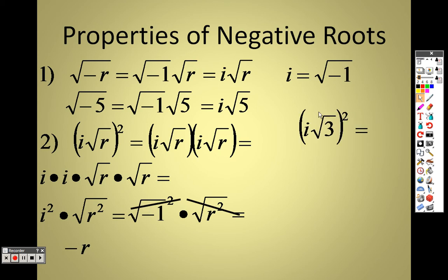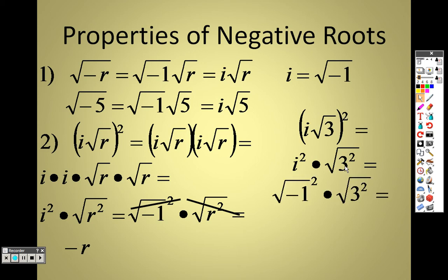So when you square that, you get i squared, and the square root of a square gives you whatever number is underneath because they cancel out — so you get 3. I should get 3 and a negative 1, so negative 1 times 3 is negative 3 as my answer. Keep in mind: i squared is negative 1. So i is √(−1), and i squared is −1.